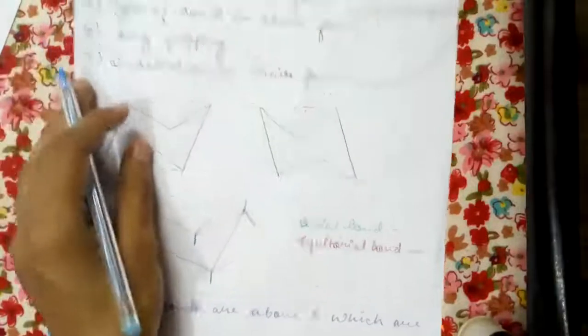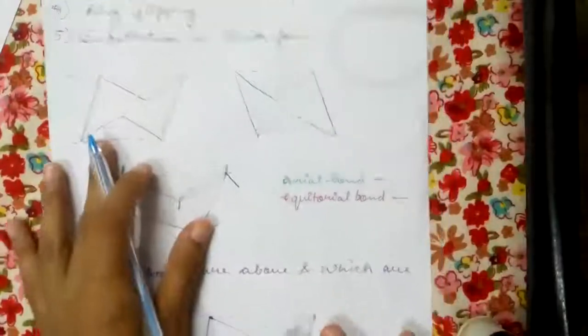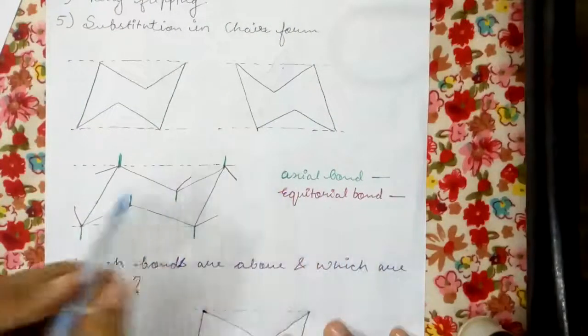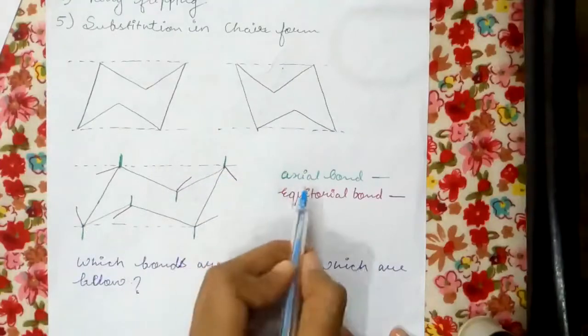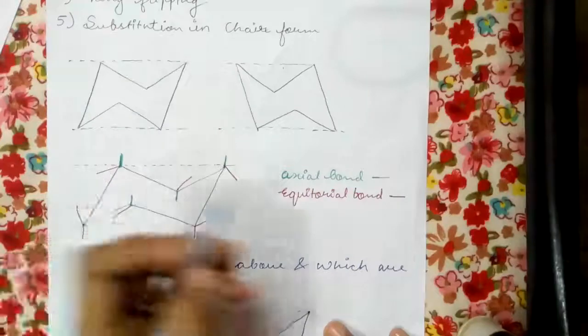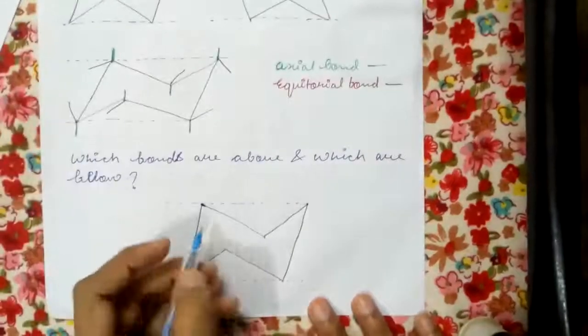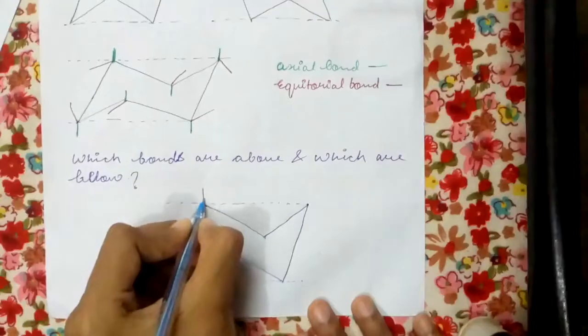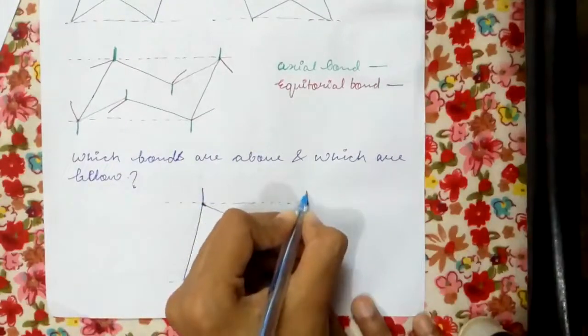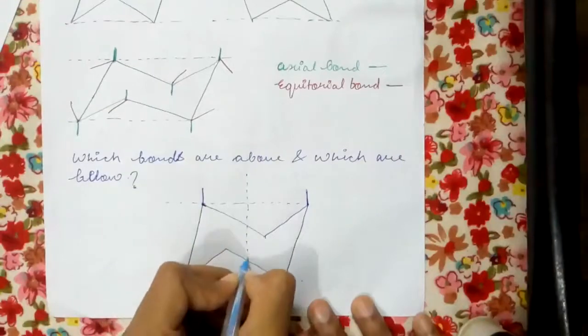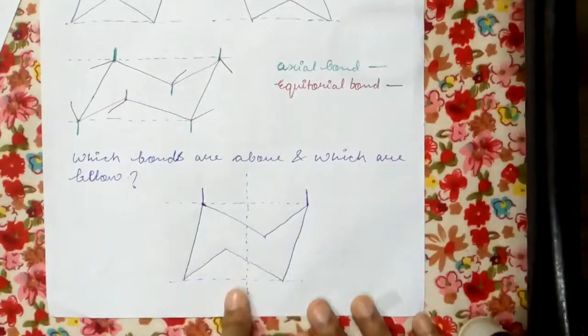Next comes the types of bonds in chair form. There are two types of bonds: axial bond and equatorial bond. You can see it clearly - with green color I have highlighted the axial bond. How do we draw these axial bonds? These axial bonds are very easy to draw. We draw them parallel to a vertical line.